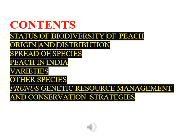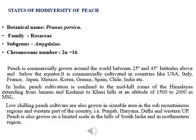Here are the contents of my presentation. Let's begin with the status of Biodiversity of Peach. As you already know, the botanical name of Peach is Prunus persica. Its family is Rosaceae, subgenus Amygdalus, and chromosome number is 16.